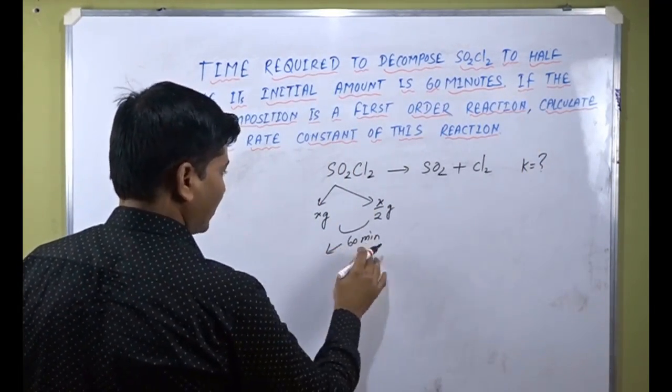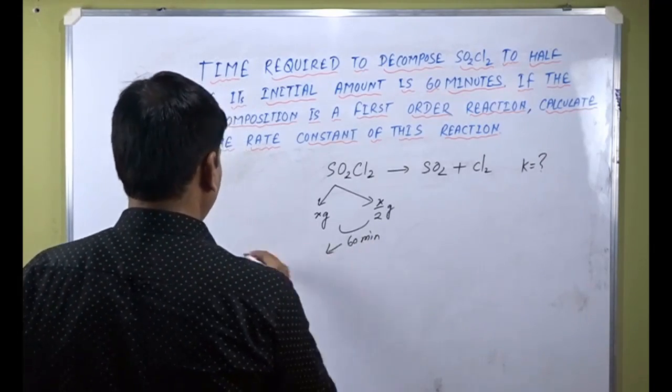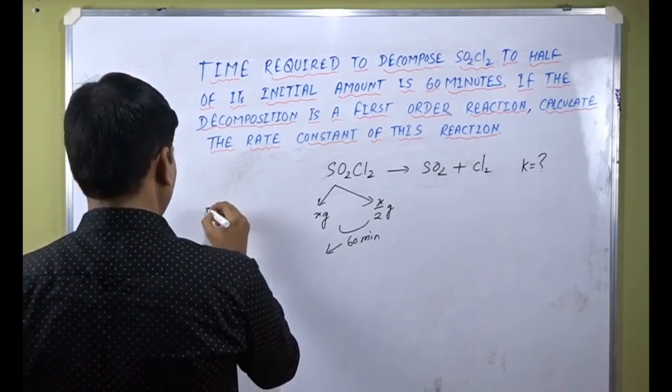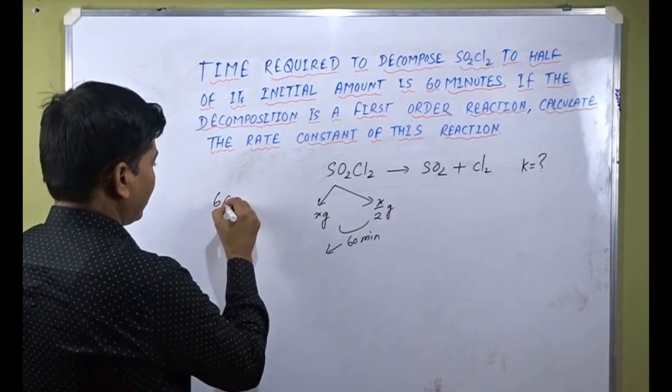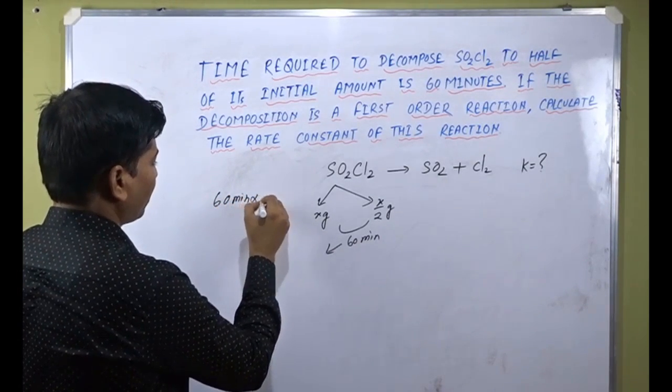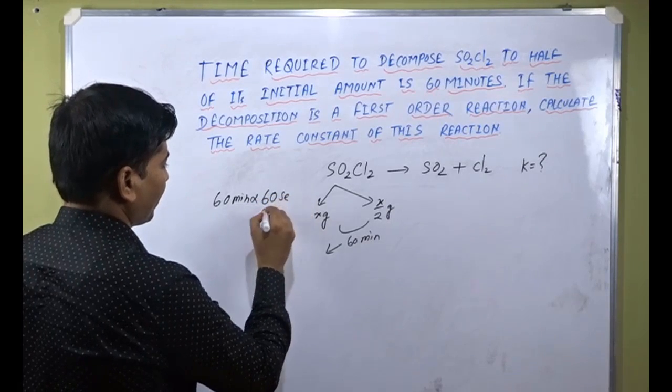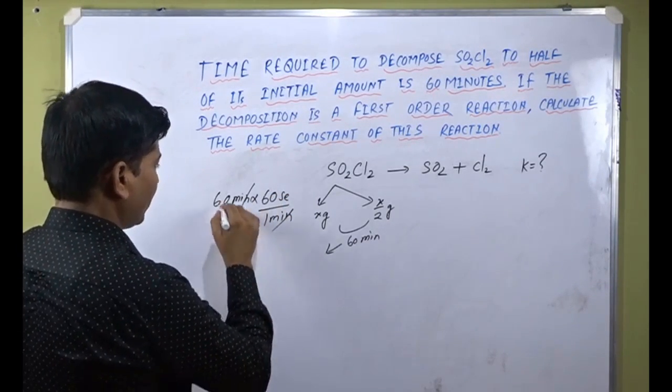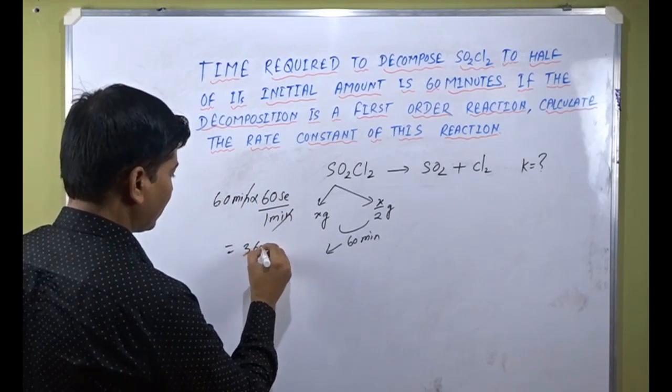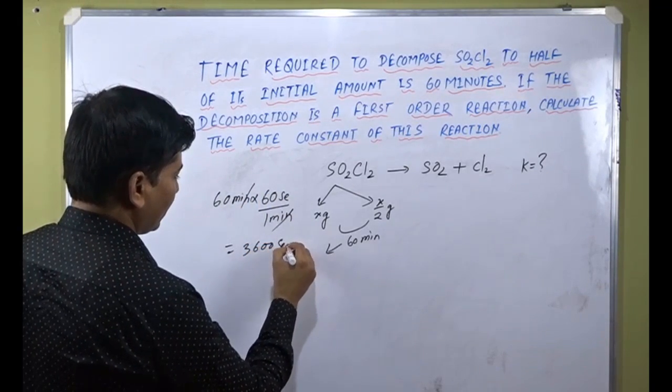Time is given here, 60 minutes. Therefore we can calculate 60 minutes into seconds. 1 minute equals 60 seconds. Here we have 60 minutes multiplied by 60 seconds per minute. Minutes cancel out. 60 multiplied by 60 gives us 3600 seconds.